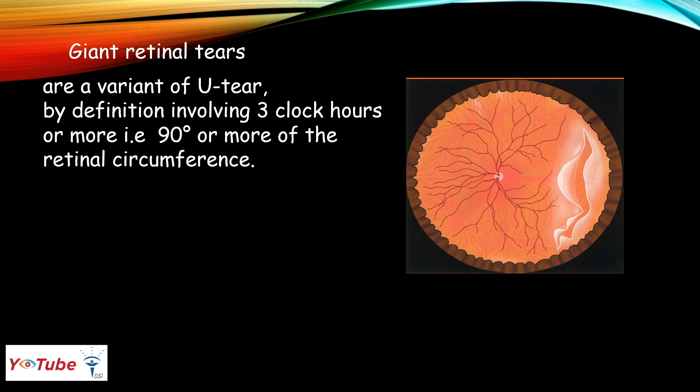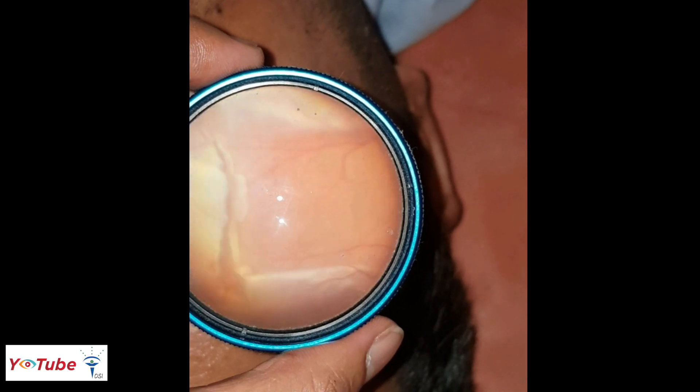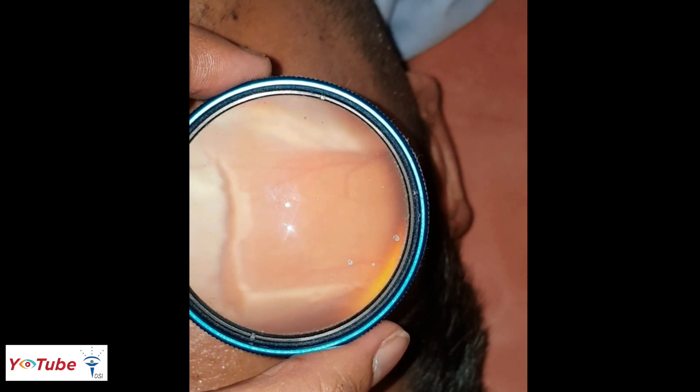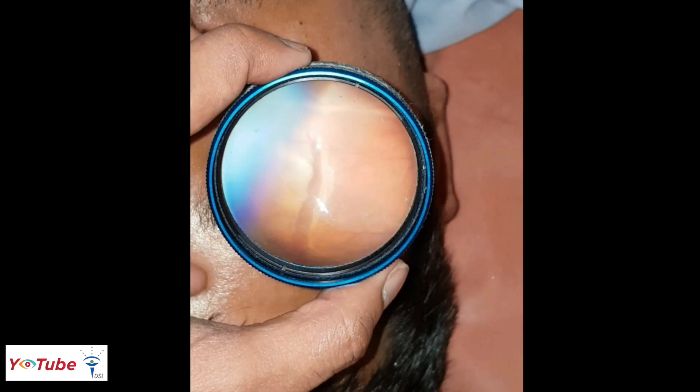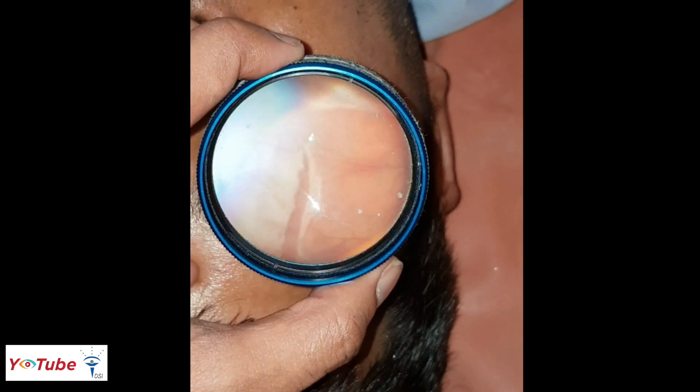The giant retinal tear, by definition, involves 3 clock hours or more of retinal circumference — that is, 90 degrees or more. This is how it looks. This is a temporal giant retinal tear in a young male following blunt trauma.